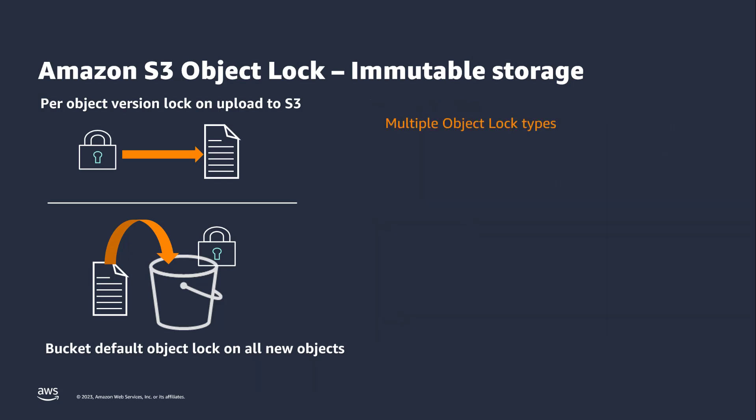Object Lock offers two retention modes. In governance mode, users can't overwrite or delete an object or alter its lock settings unless they have special permissions to do so. In compliance mode, a protected object can't be overwritten or deleted by any user, including the root user in your AWS account. Both modes require you to specify a retention period, which can be as short as one day or as long as 99 years. You can also place a legal hold on an object, which prevents it from being overwritten or deleted until the hold is explicitly removed.